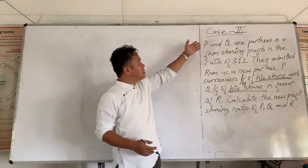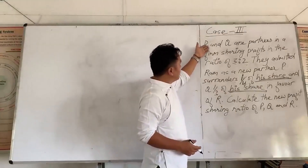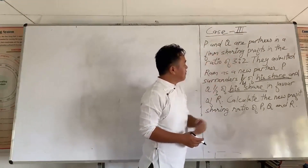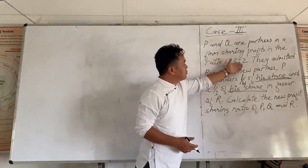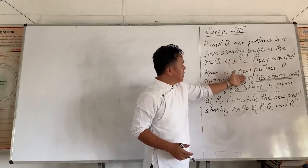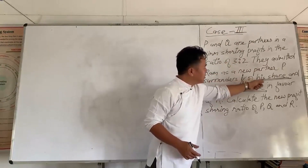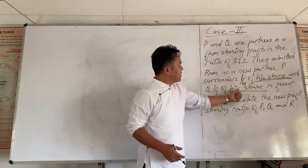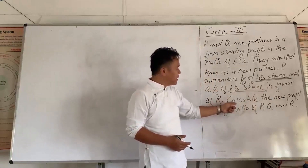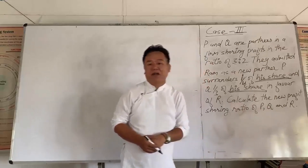Now case number 3. P and Q are partners in a firm sharing profits in the ratio of 3 to 2. They admit R as a new partner. P surrenders one-third of his share and Q surrenders one-third of his share in favour of R. Calculate the new profit sharing ratio of P, Q and R.